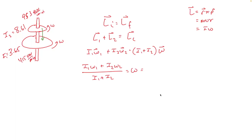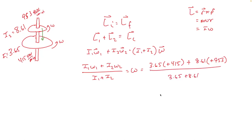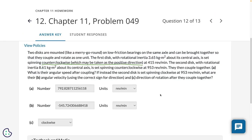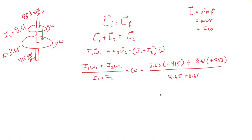We can put positive signs on both omegas since they're going in the same direction. Solving for omega: it's (I₁ω₁ + I₂ω₂) / (I₁ + I₂). Plugging in: (3.65 × 415 + 8.61 × 953) / (3.65 + 8.61). The problem asks for units in revolutions per minute, so I keep everything in rev/min — the kilogram·meter² units cancel out and we're left with revolutions per minute.